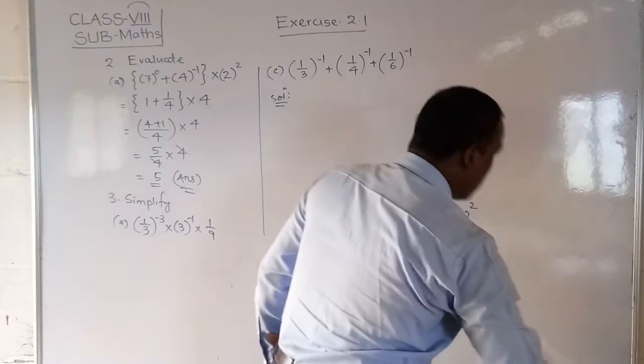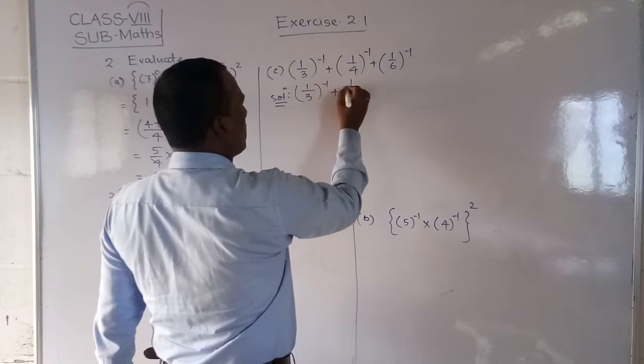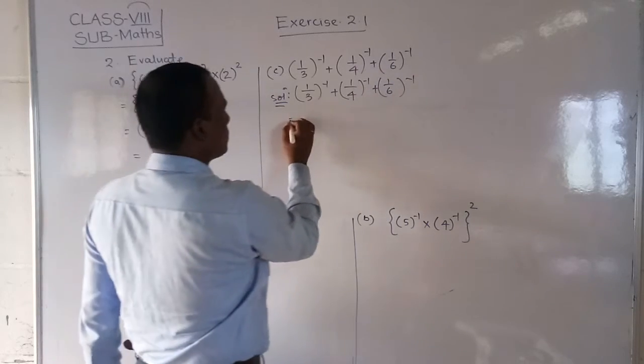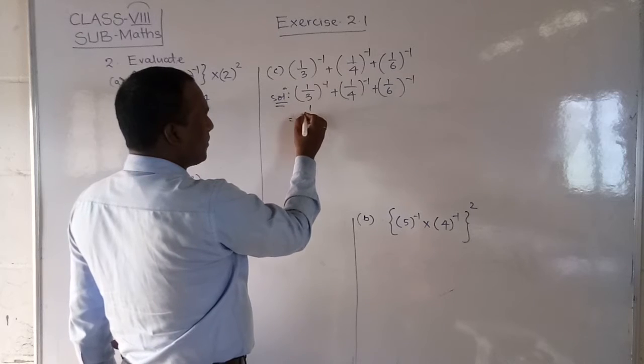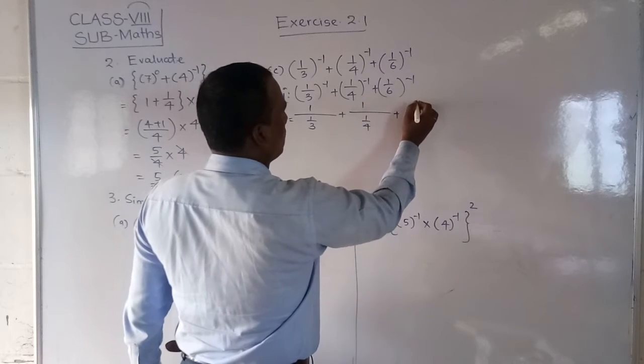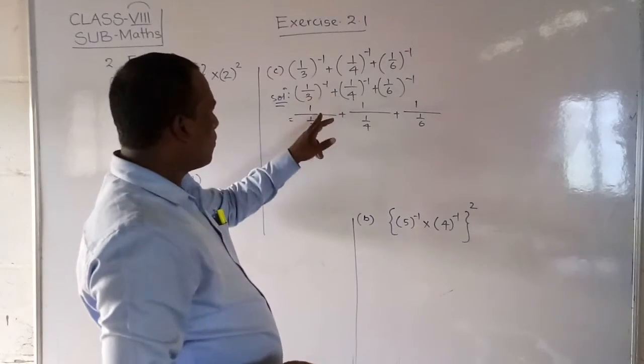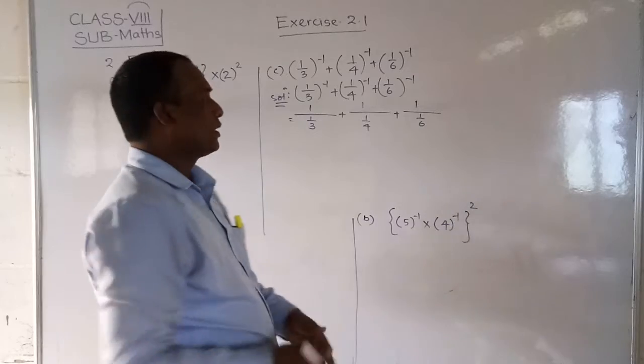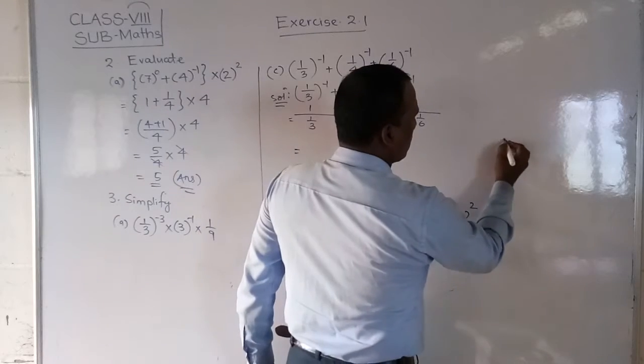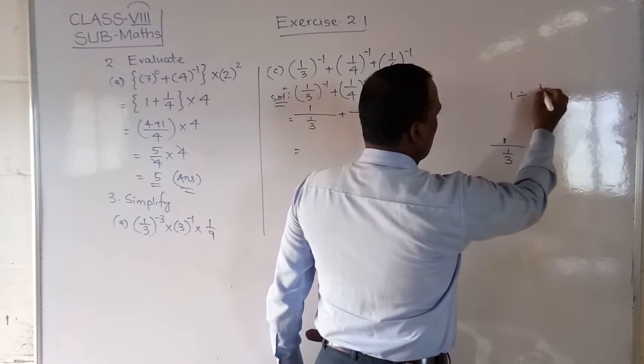Similarly, here also you should write the first question. 1 by 3 to the power minus 1, plus 1 by 4 to the power minus 1, plus 1 by 6 to the power minus 1. Now what you have to do? The negative sign you have to remove. So 1 by 1 by 3, plus 1 by 1 by 4, plus 1 by 1 by 6. Because the power is not there, anything means 1 is there, so I have not written the power. Now if this you will divide, I will solve the value like this.